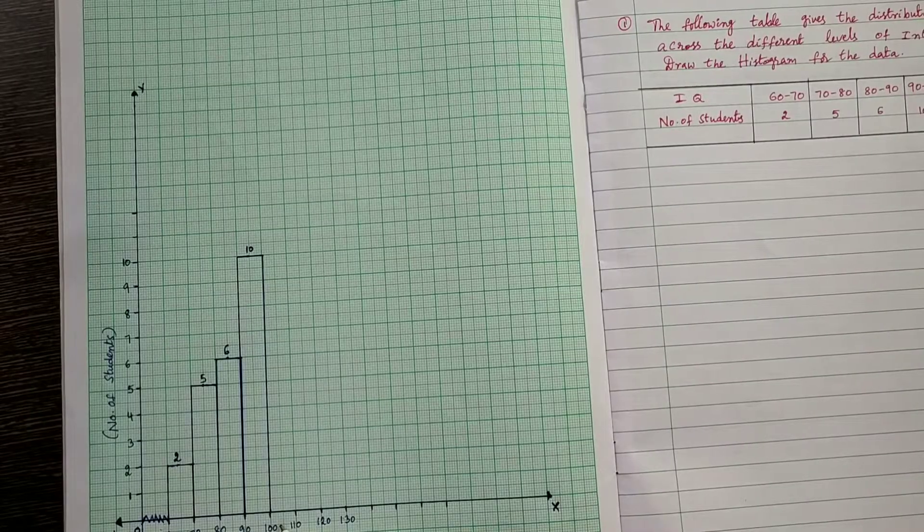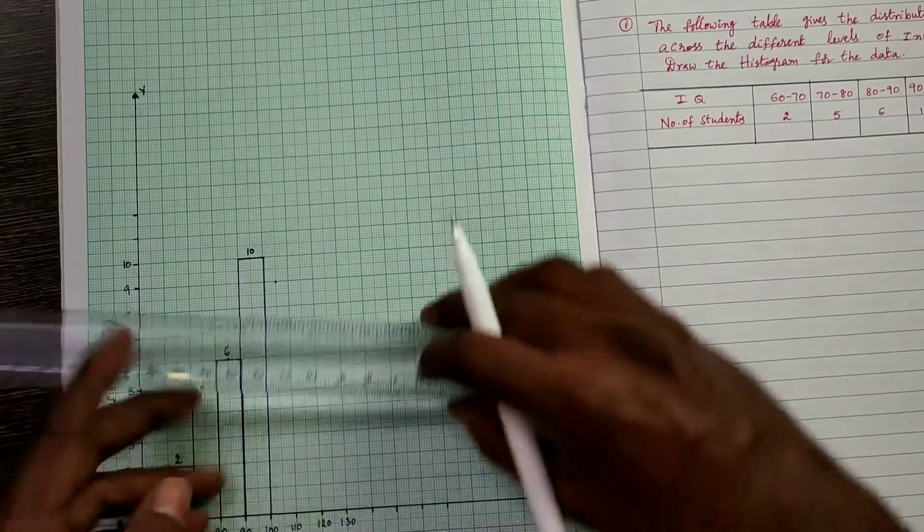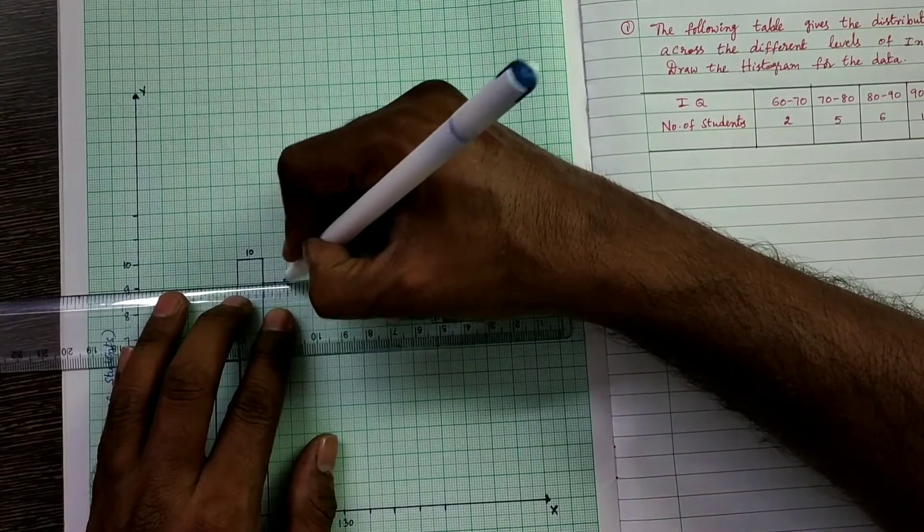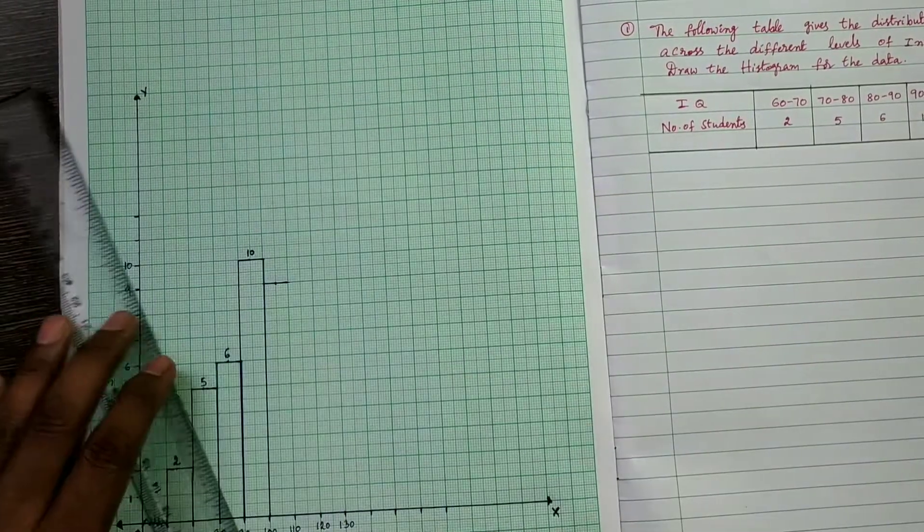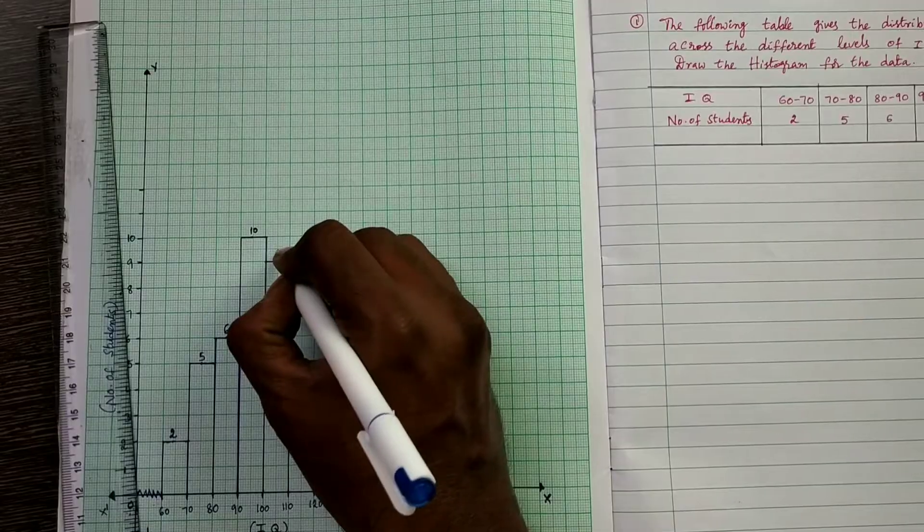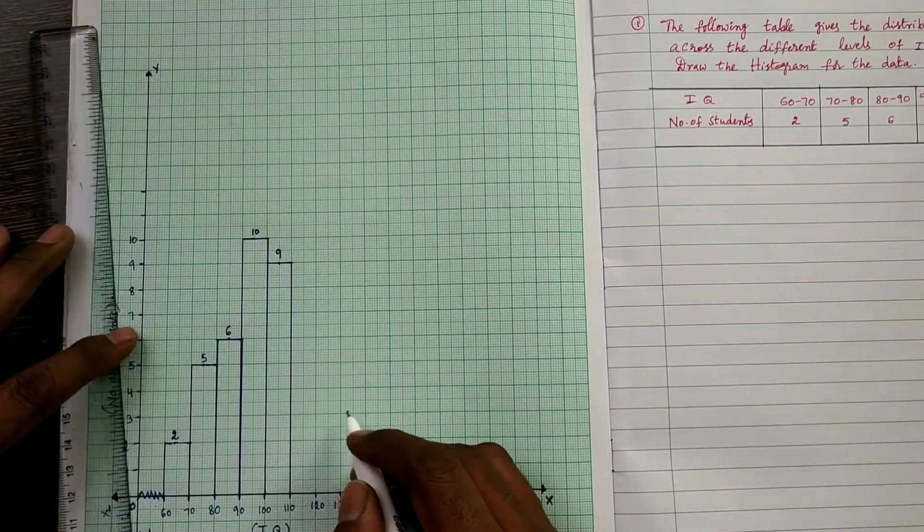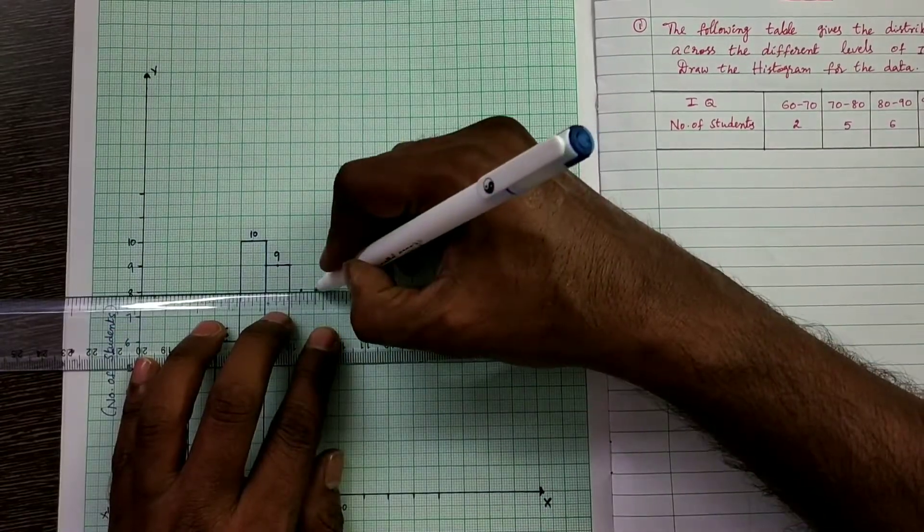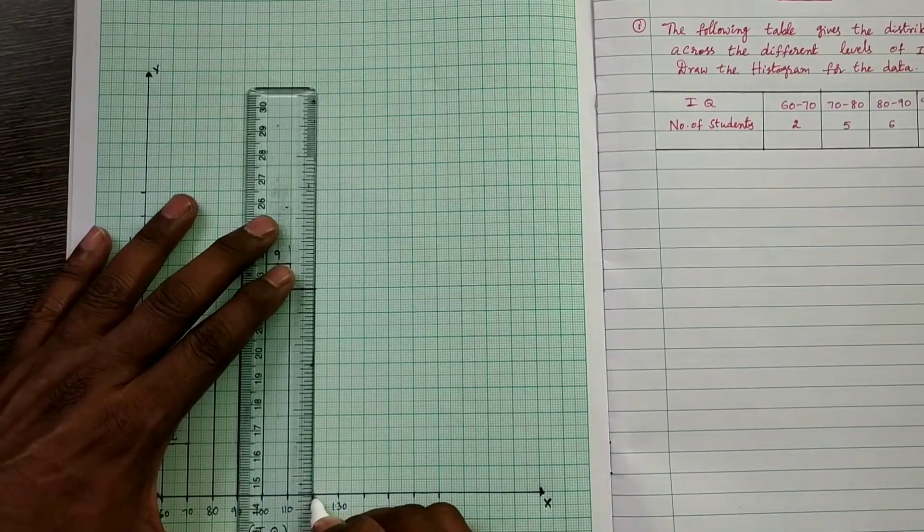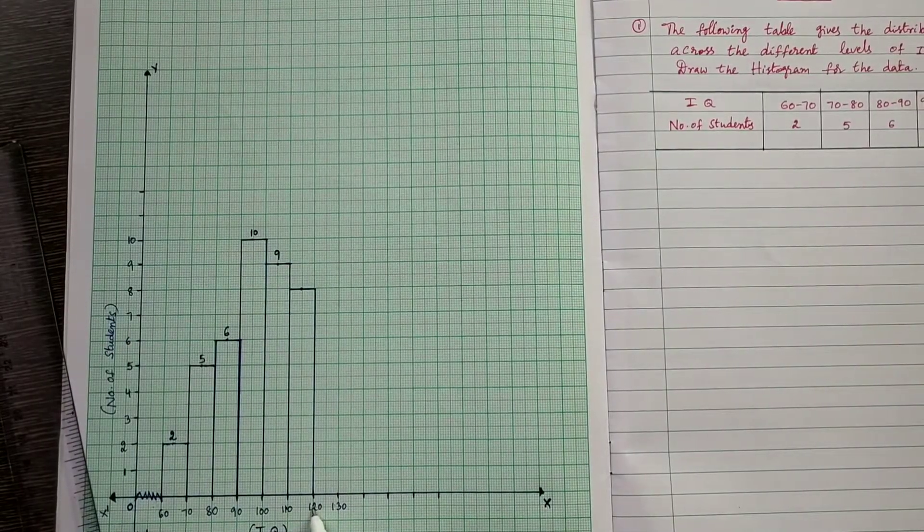Next one, 100 to 110, that is 9. So 100 to 110, that is 9. So 100 to 110, draw line segment. 100 to 110, that is 9, and join to x-axis. So this represents 9. Next, 110 to 120, that is 8. So this represents 110 to 120, that is 8.